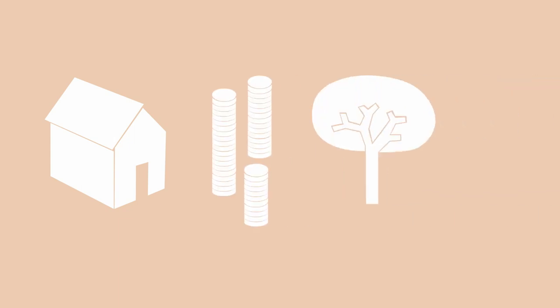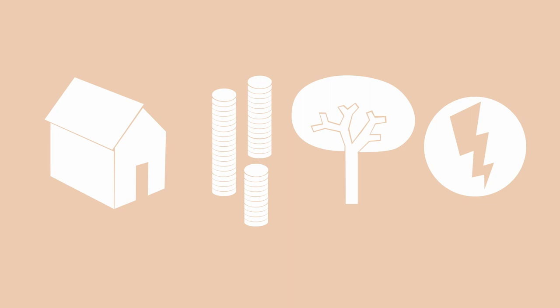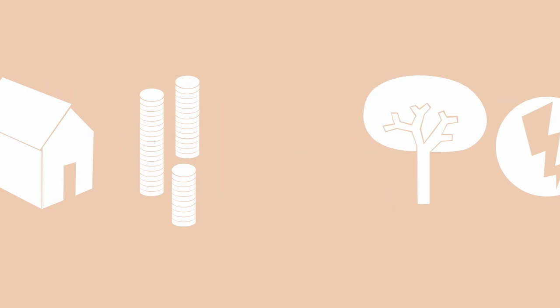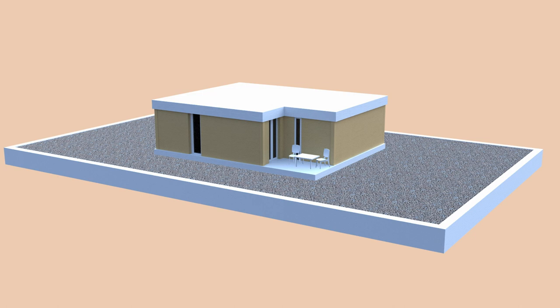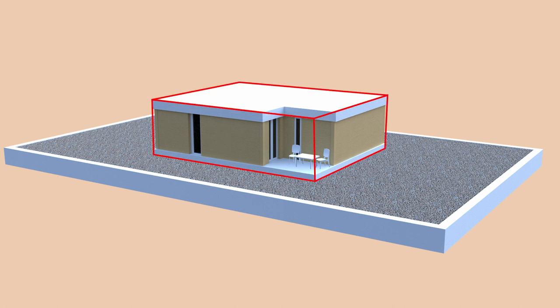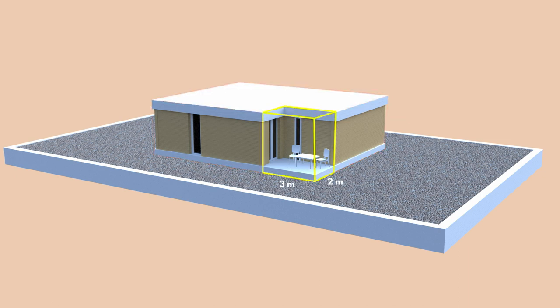Modular houses represent a new trend in construction, combining aesthetic, economic, and ecological advantages as well as energy efficiency. They represent an advantage of lower cost compared to homes built in a classic way. This modular house has the shape of a cuboid with a length of 10 m, width of 8 m, and height of 3 m, from which a cuboid with base dimensions of 3 × 2 m and the same height was removed for the realization of the terrace. Calculate the lateral area of the house and the area of the surface occupied by the terrace.